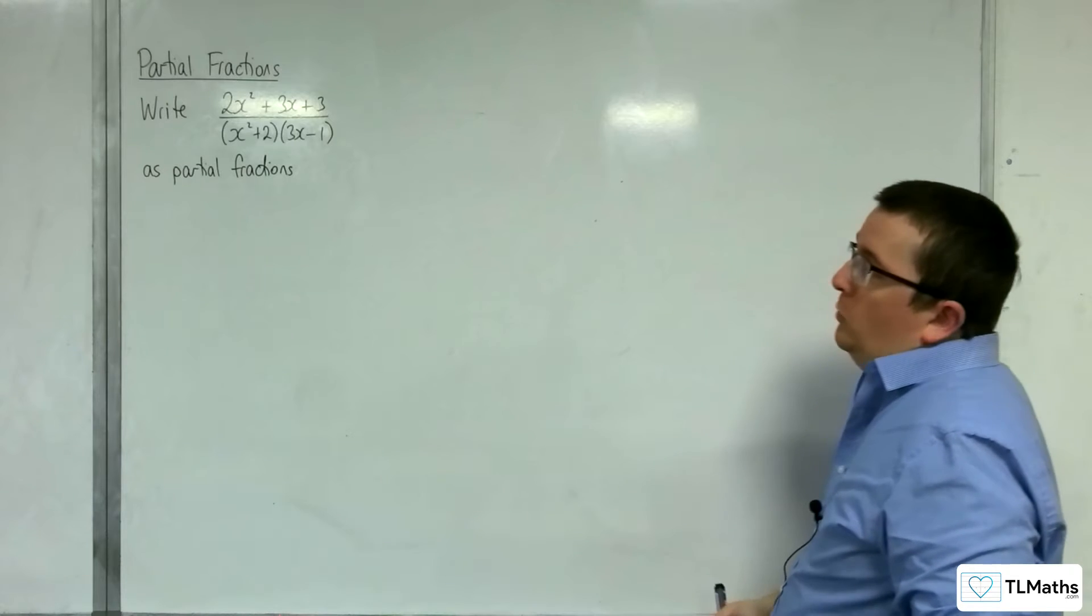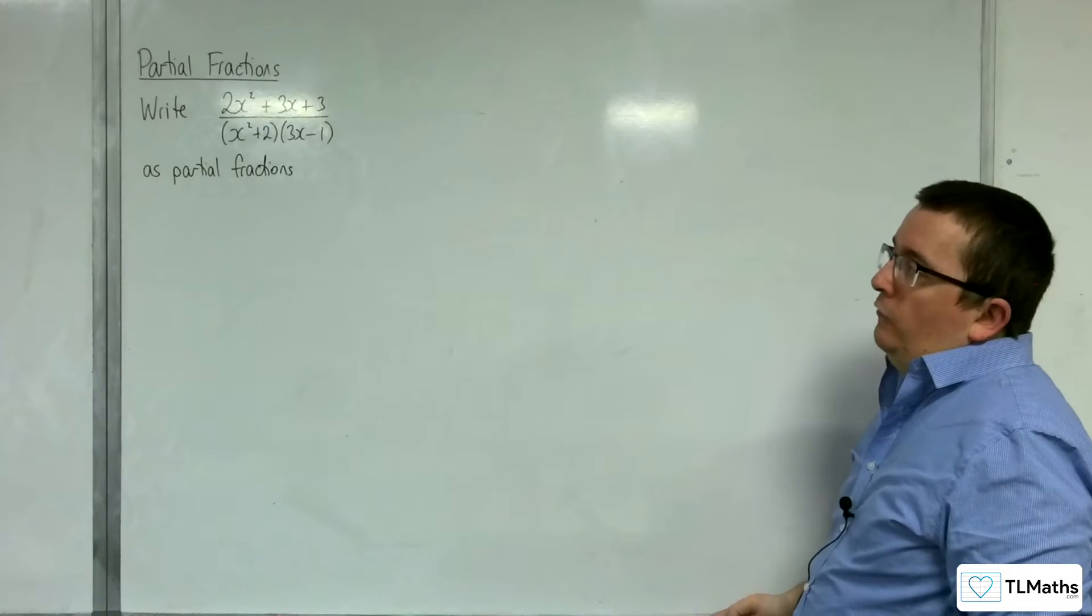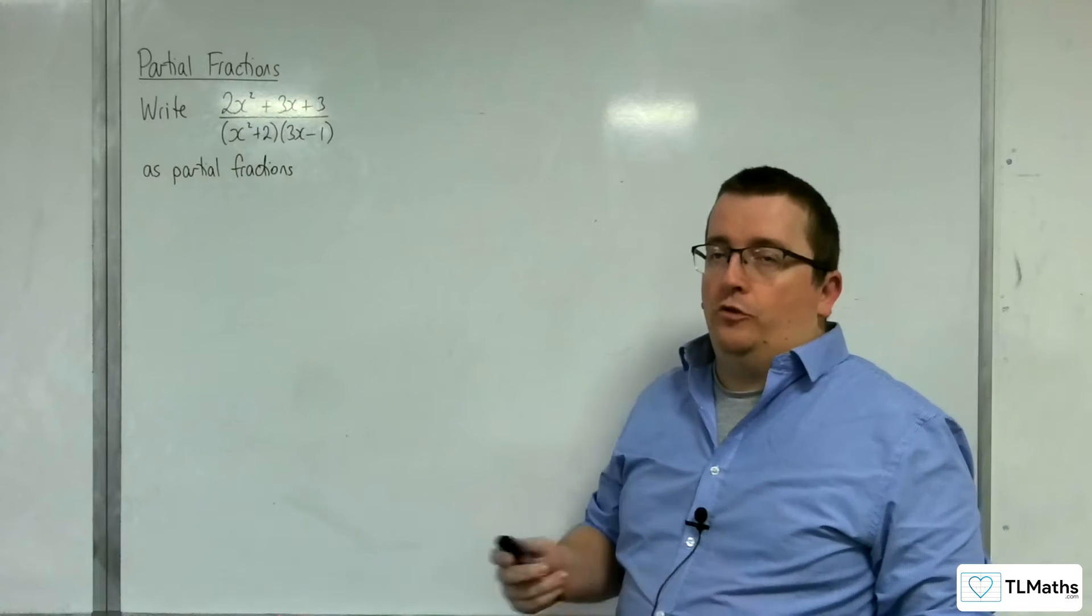In this video, we're going to write 2x squared plus 3x plus 3 over x squared plus 2 times 3x minus 1 as partial fractions.